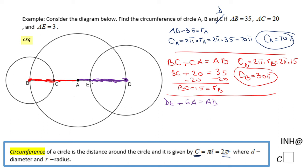AD is equal to AB because both of them are the radius of circle A, so AD is 35.